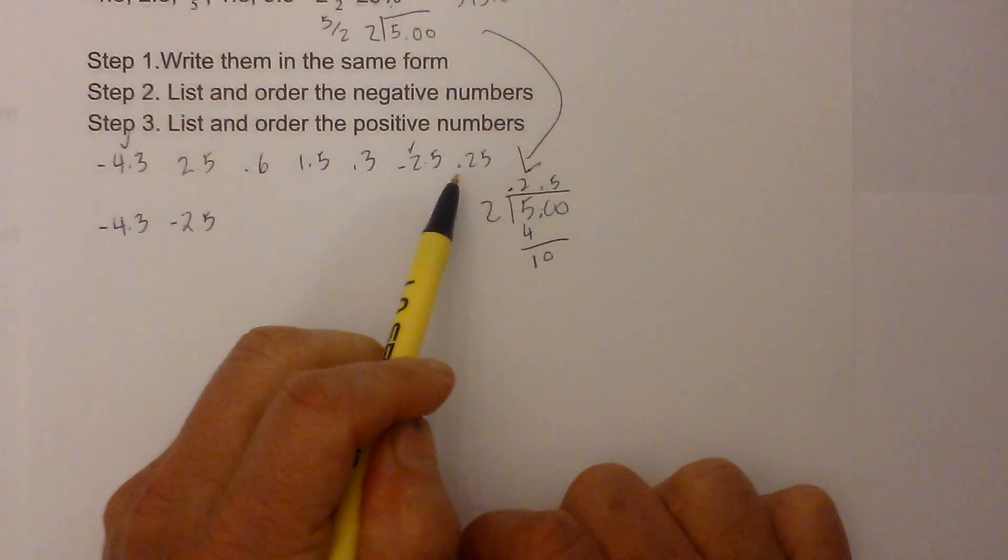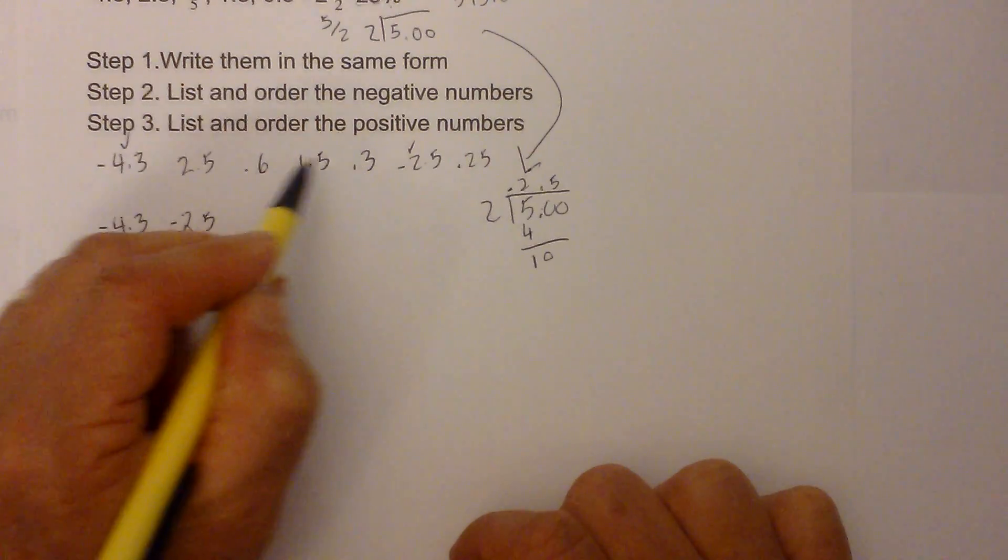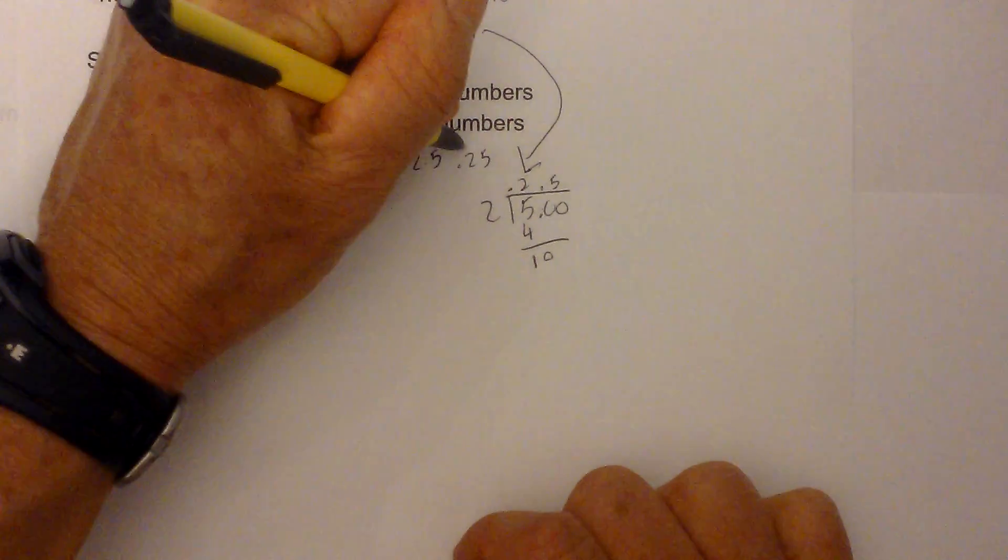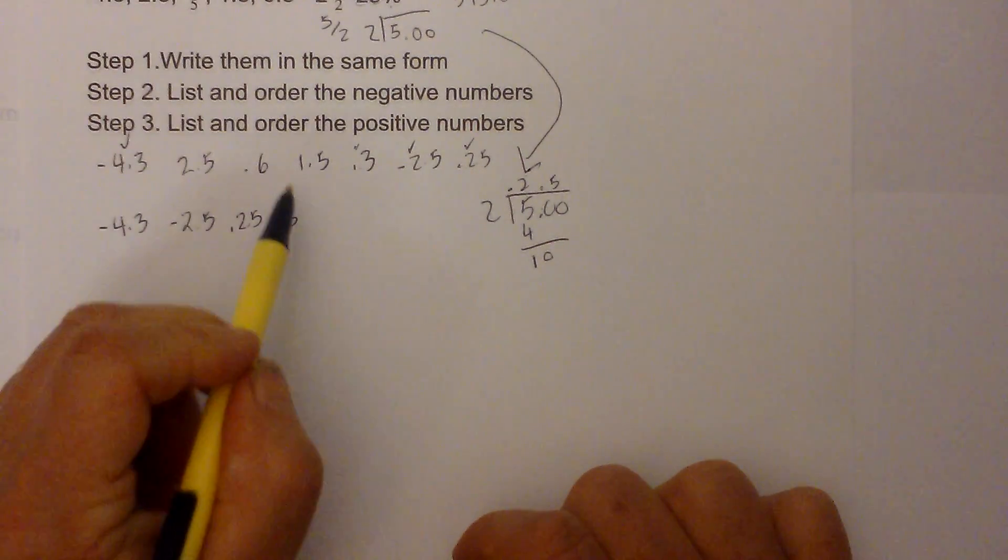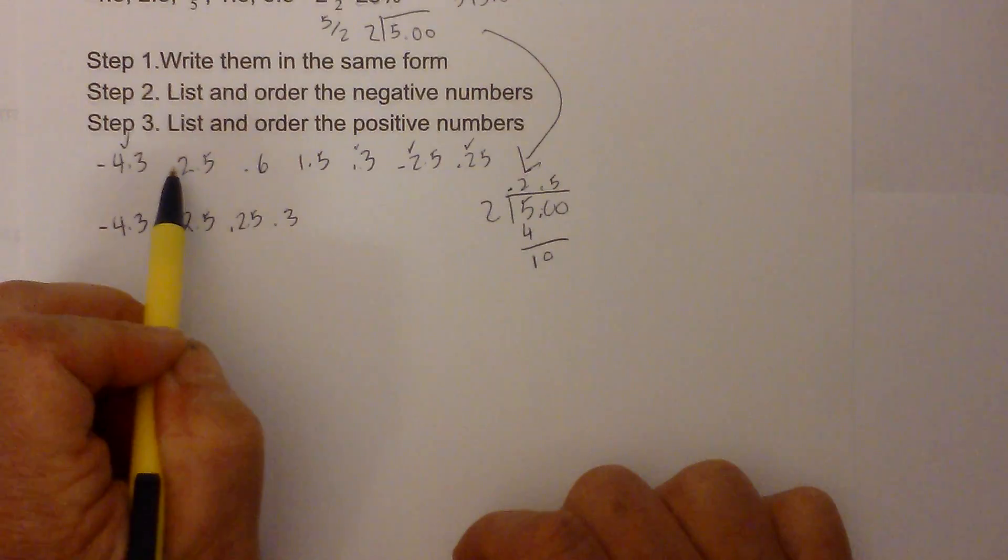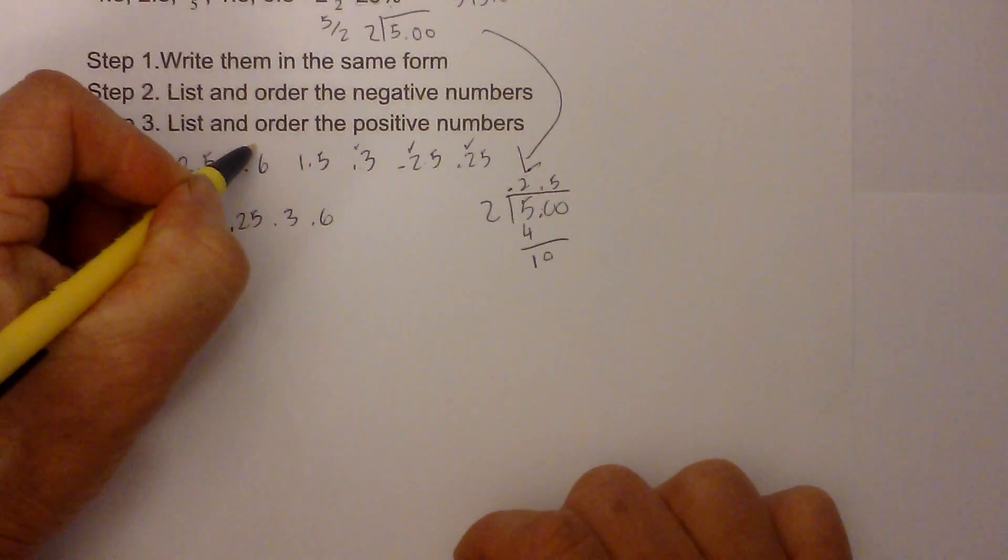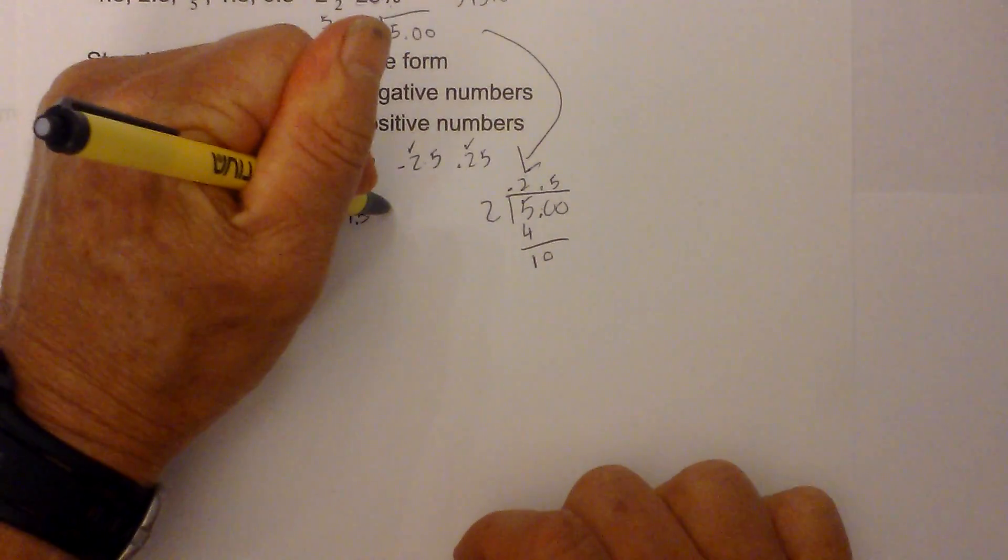And now I start with the positive numbers. I have 0.25, because 0.25 is smaller than 0.3, which is smaller than 0.6. 0.25, put a check, and then 0.3, now I have 0.6, 1.5, 2.5. 0.6 is smaller, then I have 1.5, and finally 2.5.